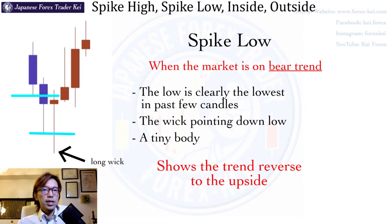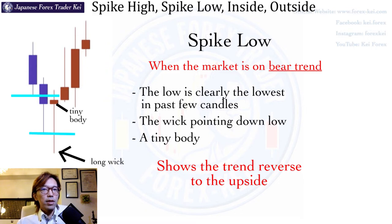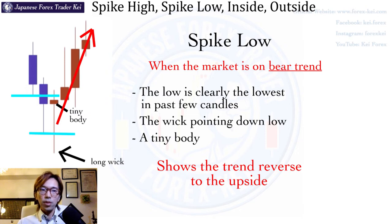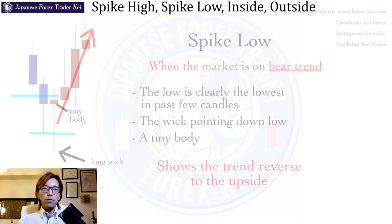If you look at this candle, the body is very tiny, just this much, but the wick is pointing down very long. So when you see a candlestick like this while it's on the downtrend, that means there's a higher possibility that the trend reverses to the upside after this day. This is one of the very important candles to look for, because when there's a trend reversal, you can see this spike low very often.